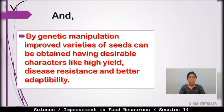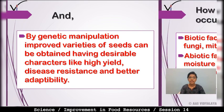Genetic manipulation se improved variety of seeds mil sakti hai jo desirable characters ki hongi — like high yield, disease resistance, and better adaptability. That by genetic manipulation improved varieties of seeds can be obtained having desirable characters like high yield, disease resistance and better adaptability.